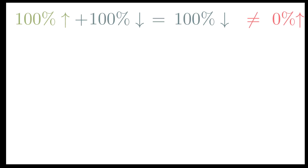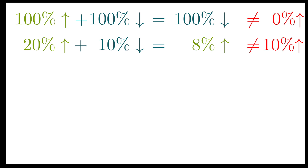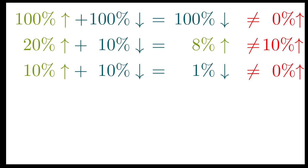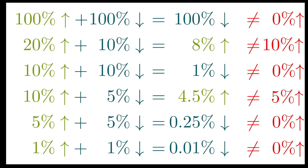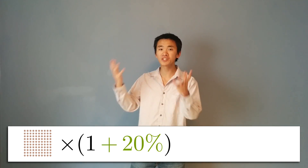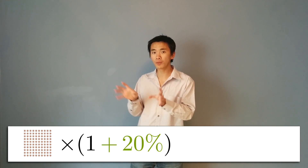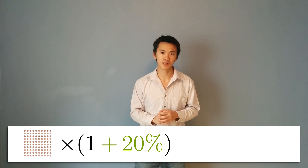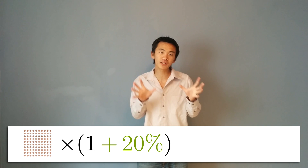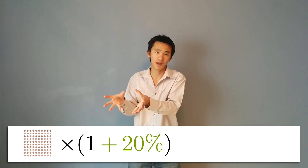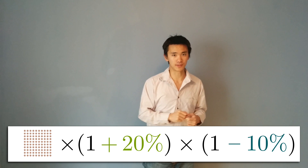Why is that? If you compute diverse combinations of increases and decreases, they never add up — but if the increases and decreases are very small, they almost do. After a 20% increase, my number of coins will have been multiplied by 1 plus 20%. Then with a 10% decrease, I multiply by 1 minus 10%.